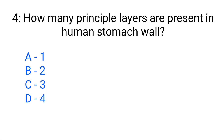Question number 4. How many principal layers are present in the human stomach wall? Option A. 1, B. 2, C. 3, D. 4. The correct answer is option C. 3.